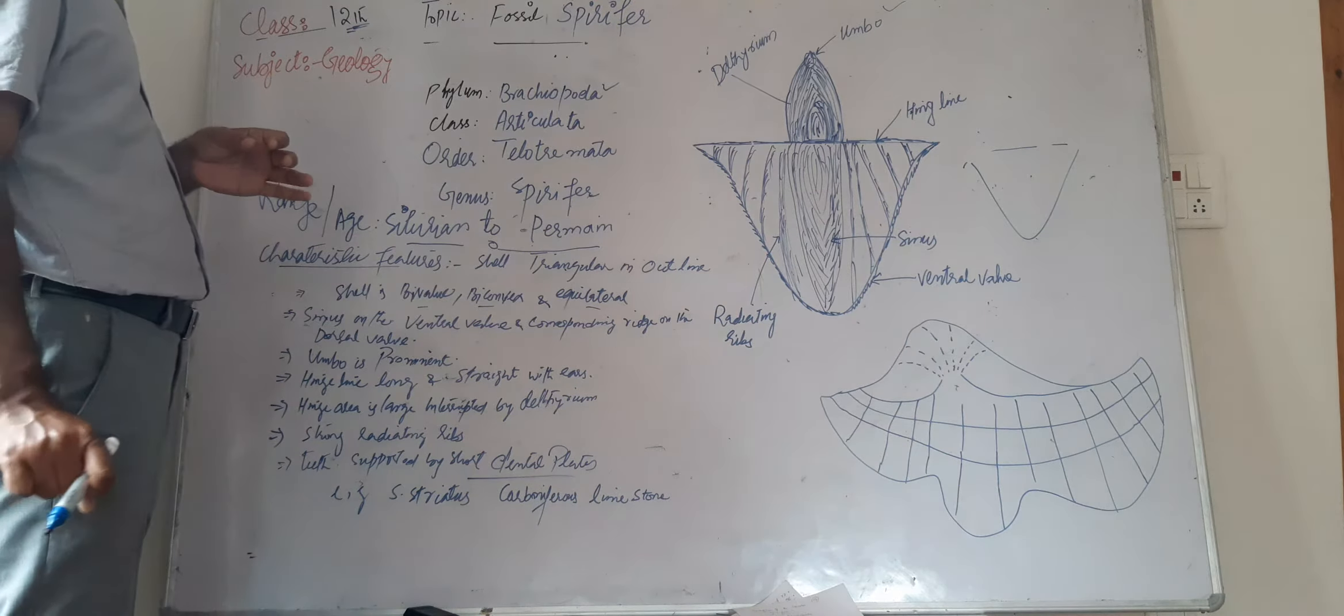And also having ears, which shows that there are places or space of the ears inside these valves which depicts or shows that the animal has ears. That means there is a space of the ears on the hinge line.